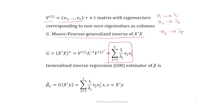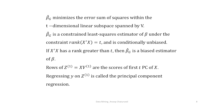The generalized inverse regression estimator of β is β̂_G = G X'y. In the OLS expression we have replaced (X'X)⁻¹ by G. Writing X'y = s, we get β̂_G = Σⱼ (1/λⱼ) vⱼ vⱼ' s. This β̂_G minimizes the error sum of squares within the t-dimensional linear subspace spanned by V, and it is a constrained least squares estimator of β under the constraint that rank(X'X) = t.